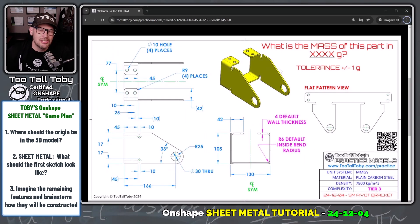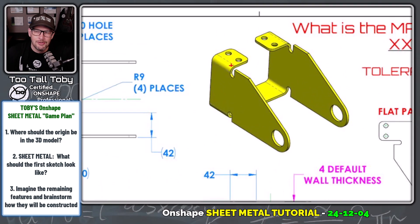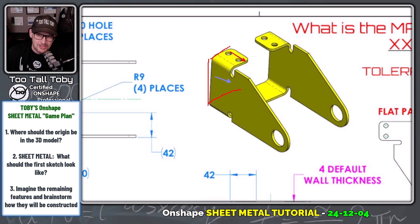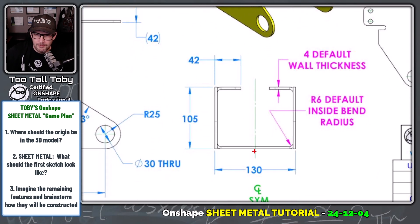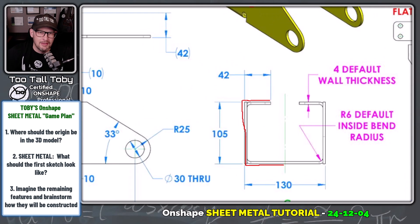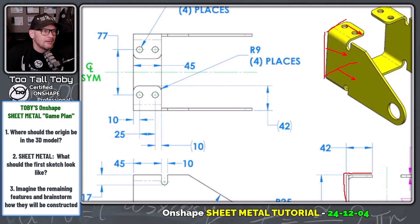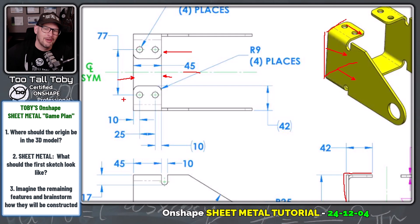The next question is: since this is a sheet metal model, what should the very first sketch look like? When it comes to sheet metal, I always advise students to look for two or more lines you could sketch in that first sketch and then extrude as a sheet metal feature. I think if we create a sketch of these three lines — 130 divided by two, 105, and 42 — we'll extrude them out to a depth of 45. Fortunately, this model has the same width for the upper flanges as it does for the connecting flange — 45 millimeters — which sets us up for a nice, simple model.